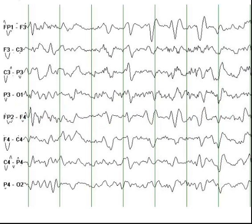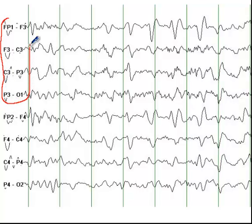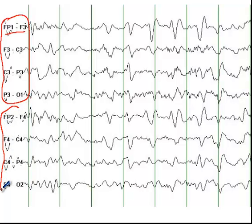So this is an EEG, just for the sake of orientation — you have the left hemisphere recording here, as we discussed in EEG101. Labels which end with an odd number, so F3, P3, O1 — these are odd numbers, so this is recording from the left hemisphere. And these are all even numbers recording from the right hemisphere.